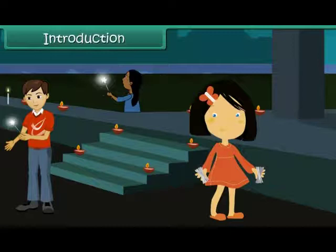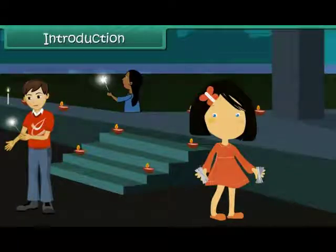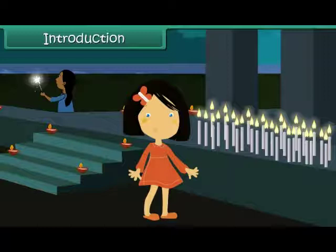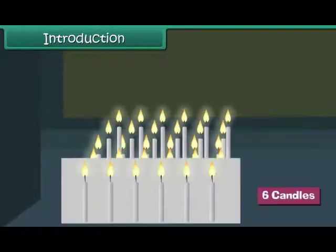Introduction. It is Diwali time. Vani is lighting candles in front of her house. She has 30 candles. She wants to arrange them in 5 rows. She wants to know the number of candles she must arrange in 1 row. She performs a quick calculation and decides to arrange 6 candles in every row.